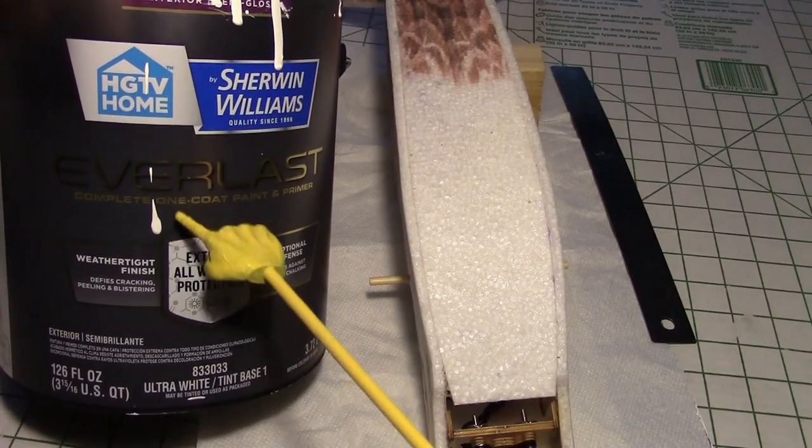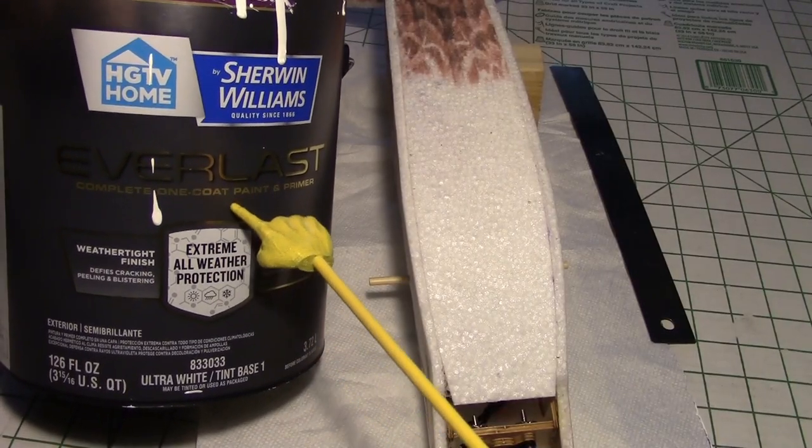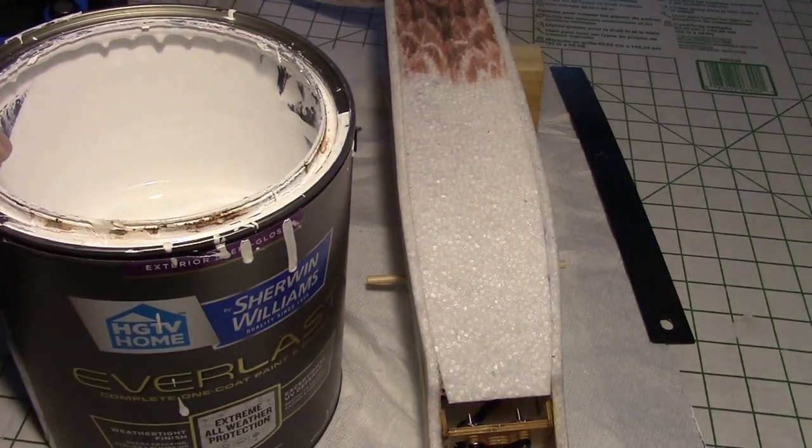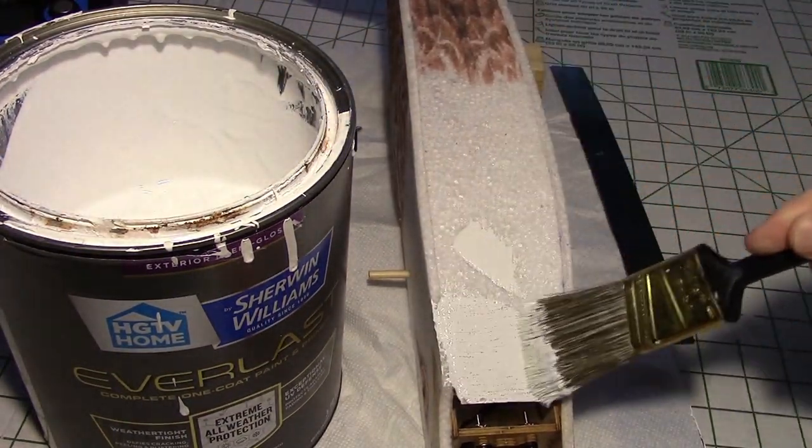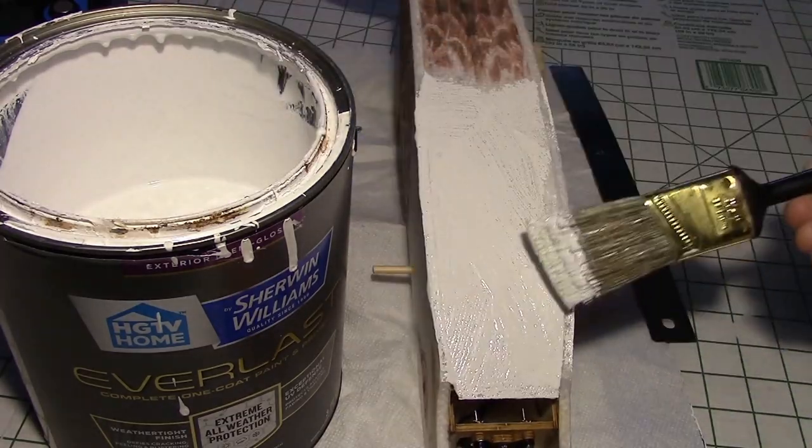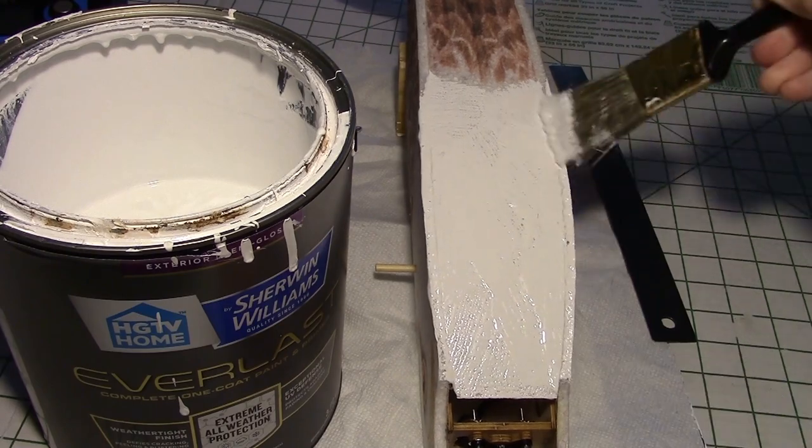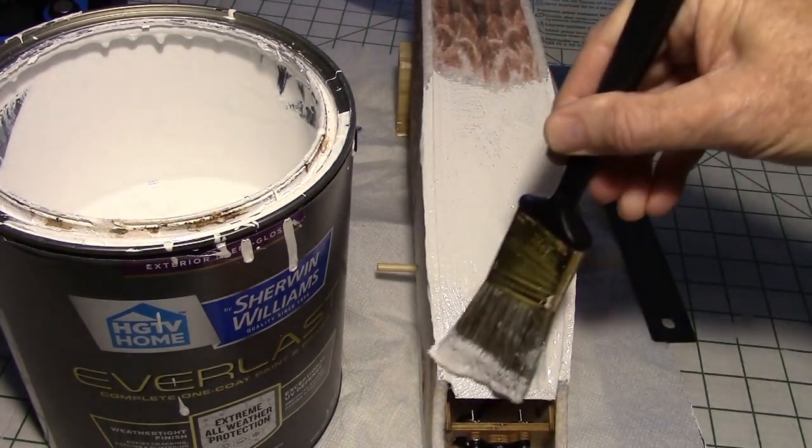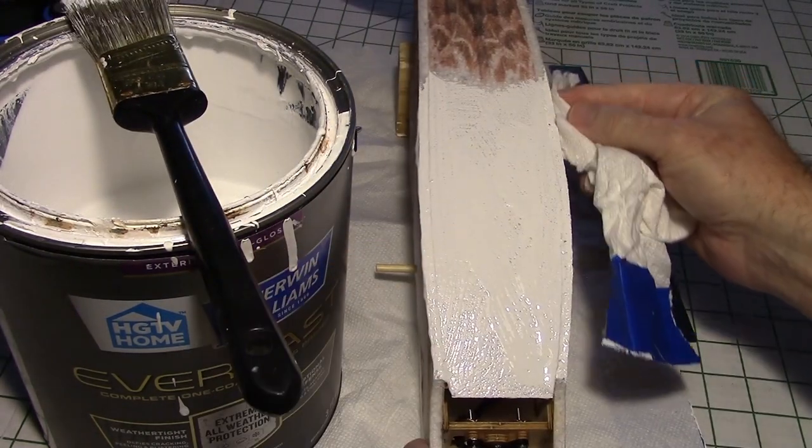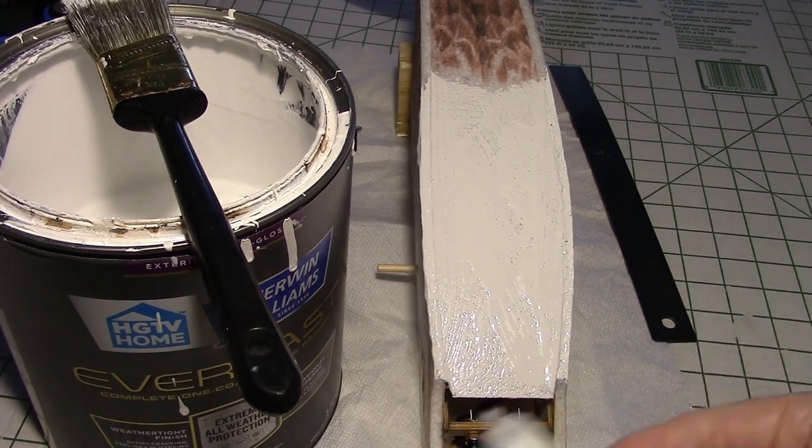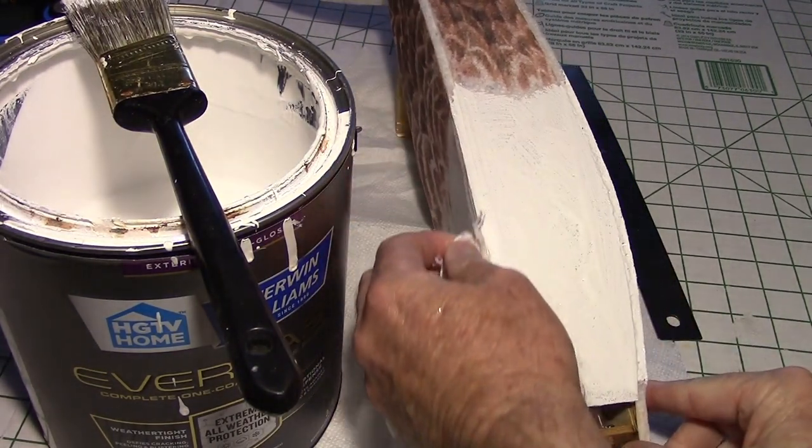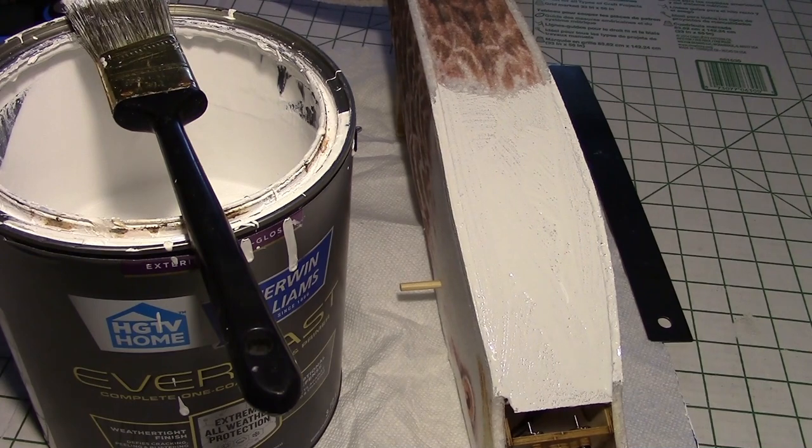Now let's use some one coat latex paint to paint the foam on the bottom front. This protects the bird against landing in grass and getting stains all over it. Give the bottom a good coat and make sure it soaks into the foam. Then you can rub the sides with a paper towel to make sure there's no drools. And once it looks good, just let it set and dry.